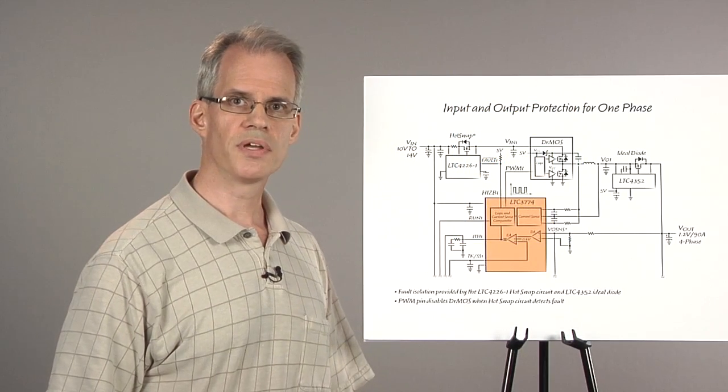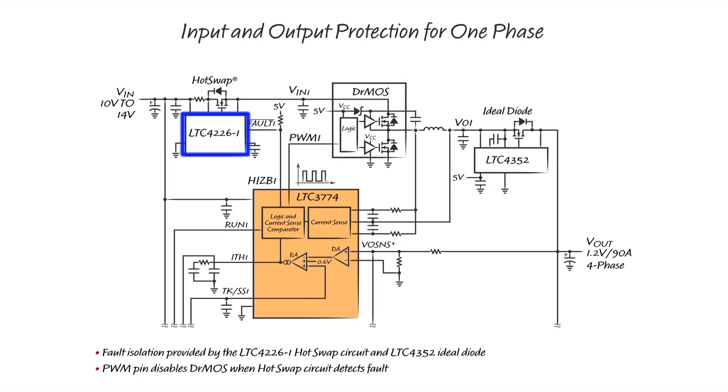Here is a close-up view of just one phase of this converter. An LTC4226-1 circuit protects the input. When either the top FET or bottom FET is shorted, a large inrush current will flow to the power stage. The LTC4226-1 hot-swap circuit will first limit this fault current. After a programmed circuit breaker delay, the hot-swap circuit will turn off the hot-swap FET, then pull the fault pin low. The fault pin is tied to the HIZB pin of the LTC3774. When the HIZB pin goes low, the PWM output of the LTC3774 is floated, which in turn disables the driver MOSFET to prevent further switching.